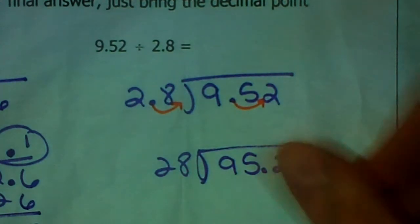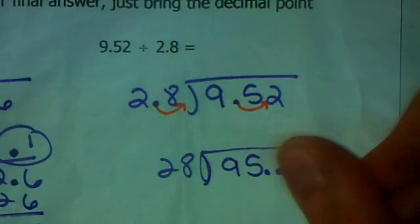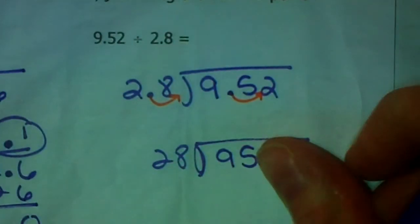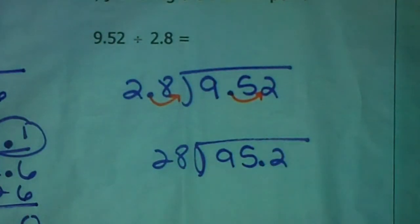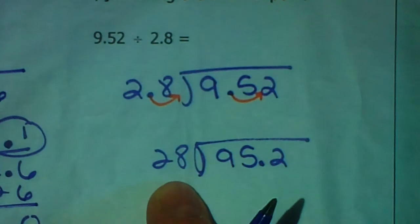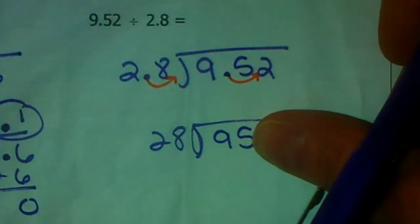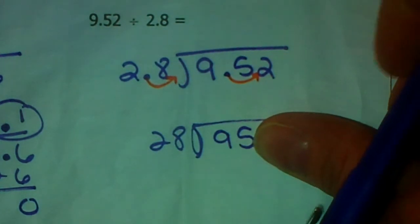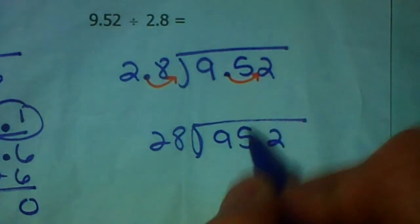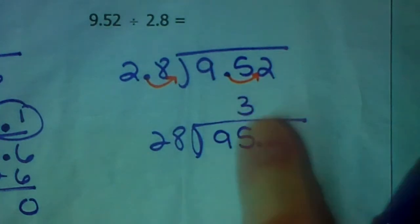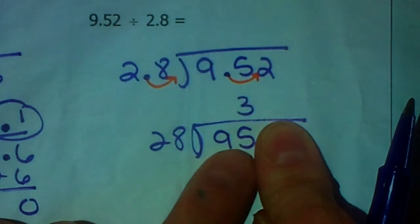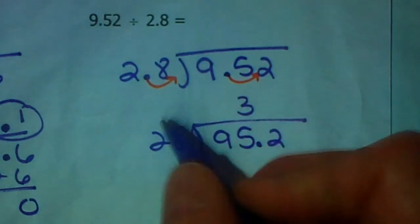All right, so I know that 28 doesn't go into 9. It does go into 95. And this is where it's kind of tricky. You can use estimation to help you. 28 is pretty close to 30. And for me, it's really easy to count by 30. 30, 60, 90. And if you look here, we have 95. So I know 30 would go into 9 three times. I'm guessing 28 would go into 95 about 3 times as well. So I'm going to put this 3 right above the 5 to represent that the 28 is going into the 95.